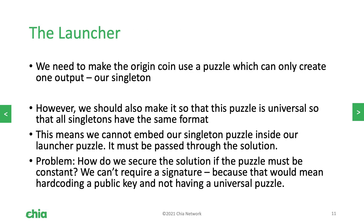This means we need to make the origin coin have a custom puzzle that only creates one output, but we need to make this puzzle universal so that all singletons have the same format. This means we cannot embed our specific singleton puzzle inside the launcher puzzle — it must be passed through the solution. But if we have a universal puzzle, how do we secure that parameter? We can't sign it with a public key, so we need to come up with something else.